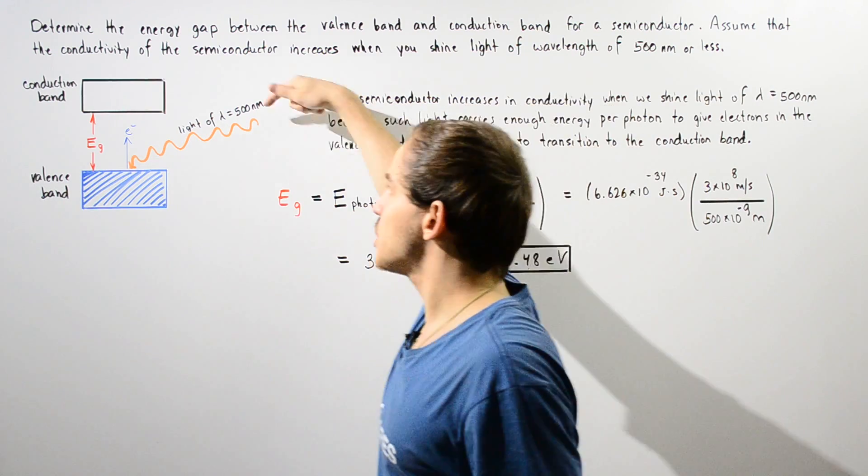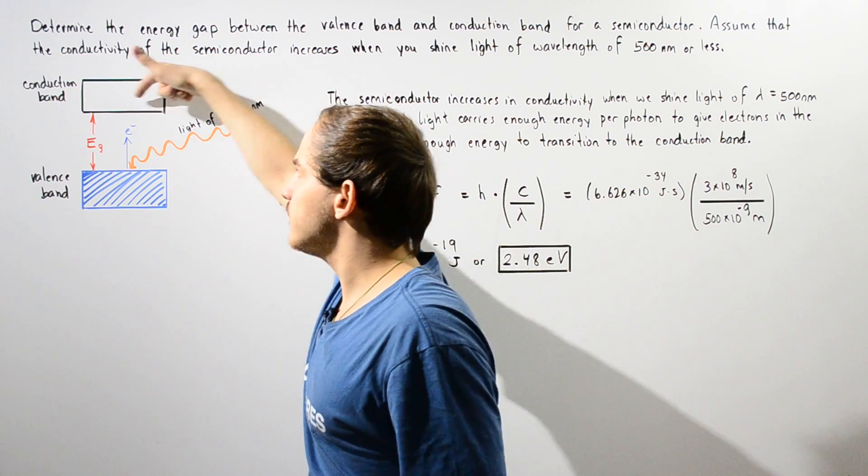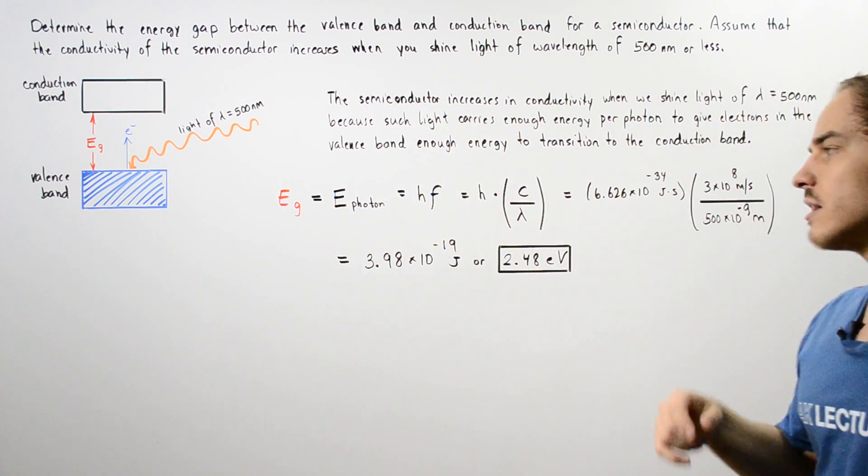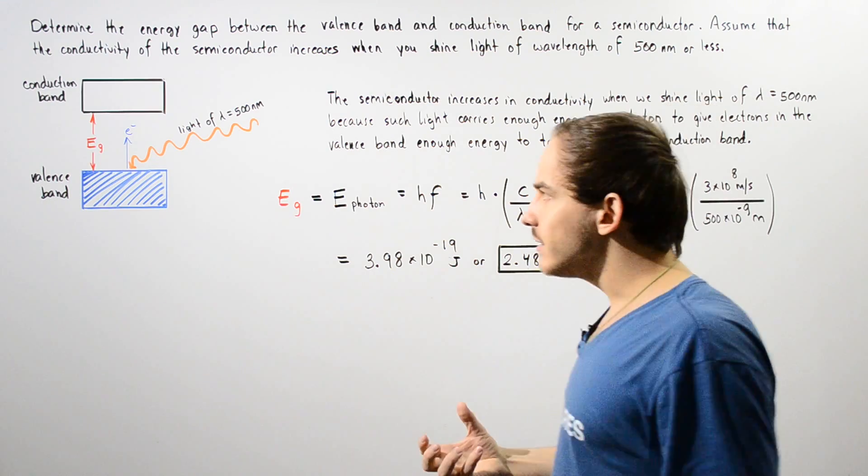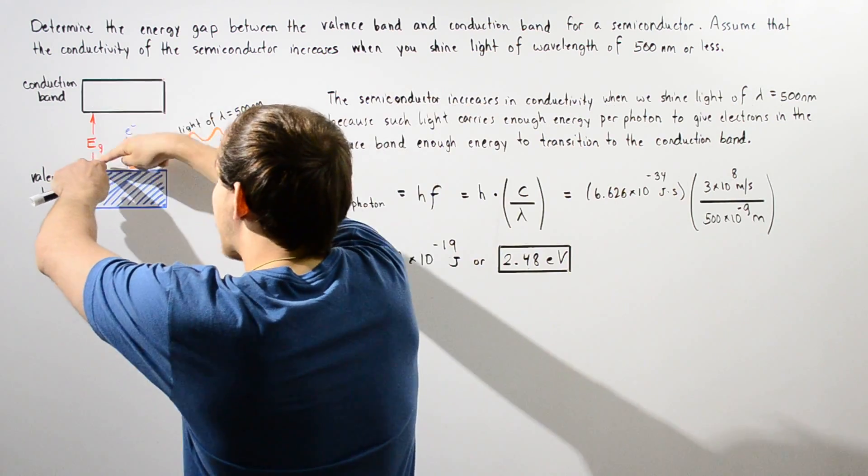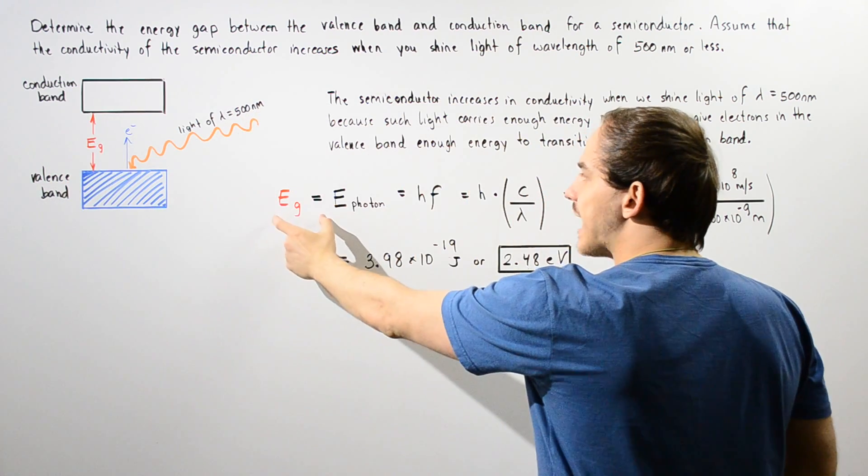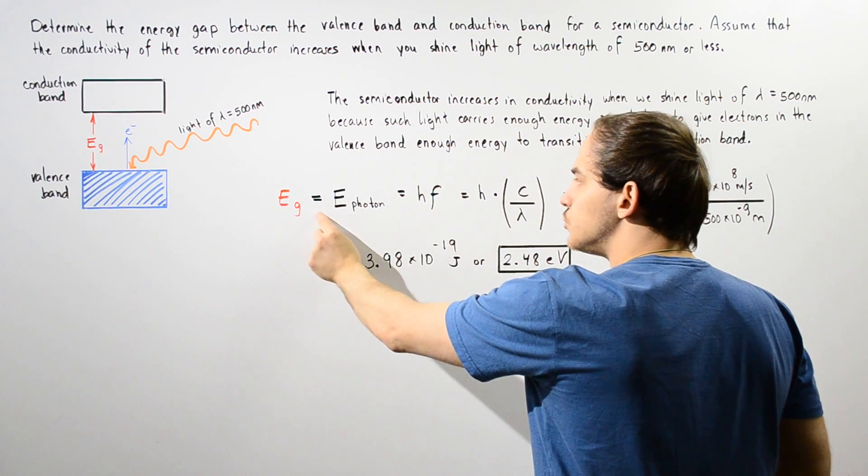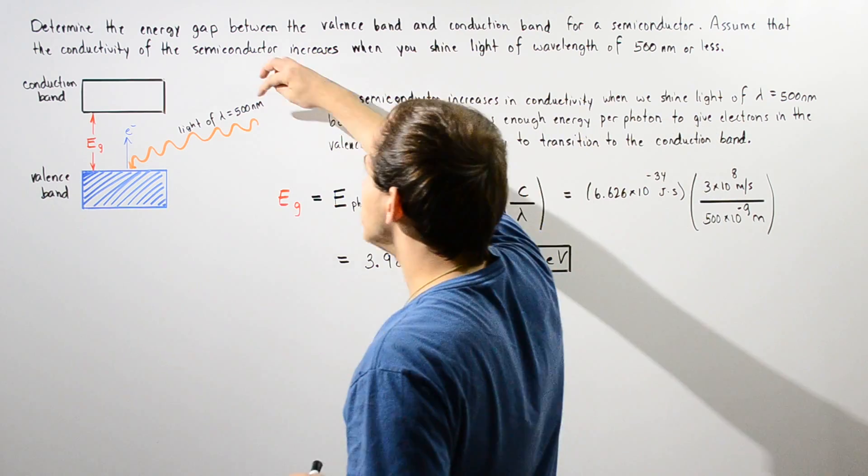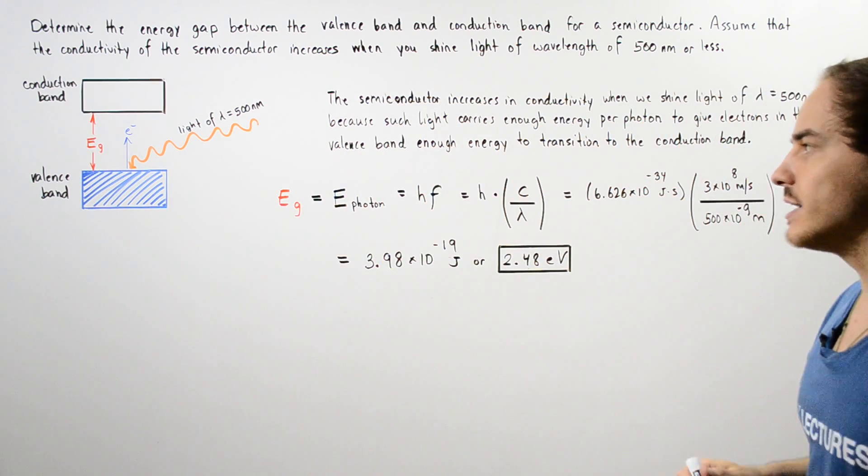And if that takes place, the electrons can transition between the quantum states within the conduction band and that conducts electricity. So to calculate how much energy is given by this energy gap, we simply set our gap energy equal to our energy within that photon when the light has a wavelength of 500 nanometers.